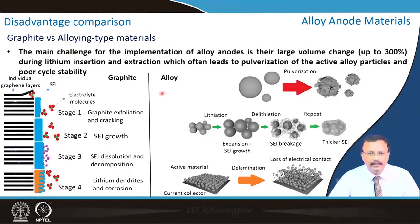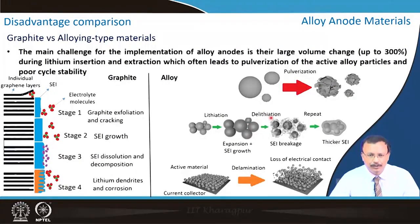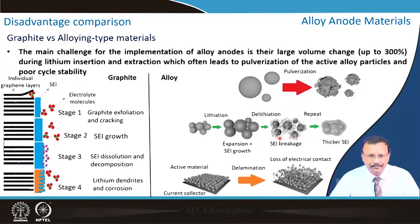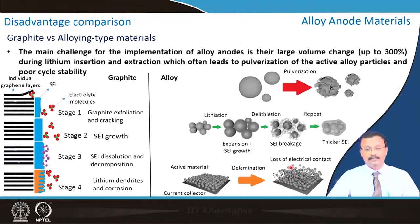If you want to replace graphite with alloy, you will have to tackle these problems. The first is volume expansion upon lithiation, and beyond a critical size pulverization takes place, leading to the formation of a thicker SEI that may not always be permeable to lithium ion. Due to the combined effect of pulverization and SEI formation followed by disintegration, the electrode material is delaminated from the current collector, causing loss of active material and affecting capacity.